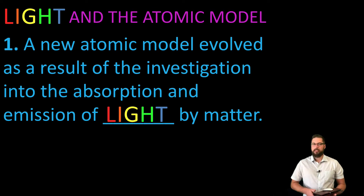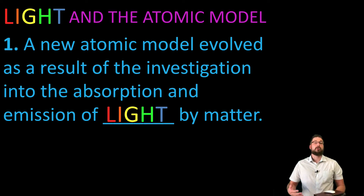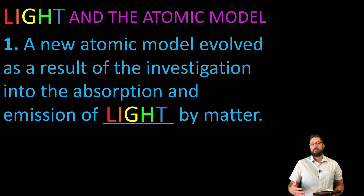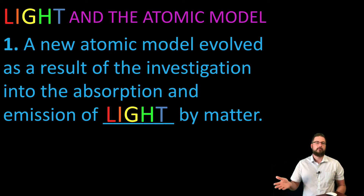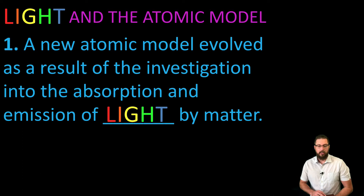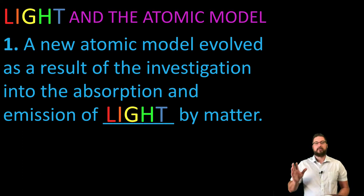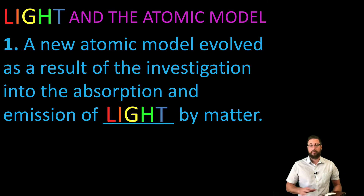Niels Bohr used this concept of the absorption and emission of light by matter to determine that electrons live in specific energy levels. Different elements will actually emit and give off different levels, or different amounts, of energy in the form of light — and that is dependent upon the way their electrons are oriented within the atom.